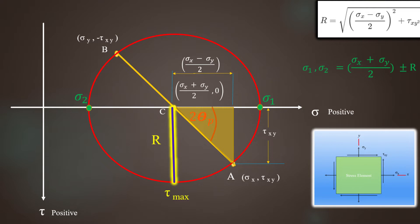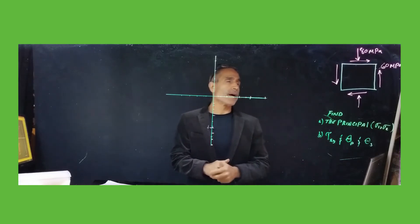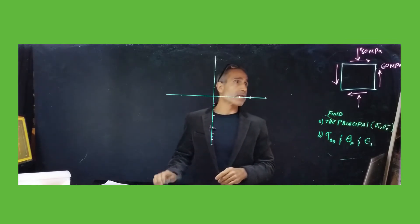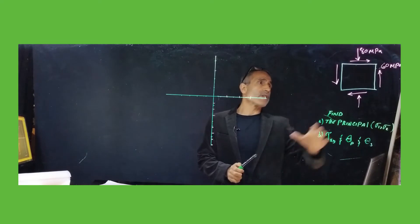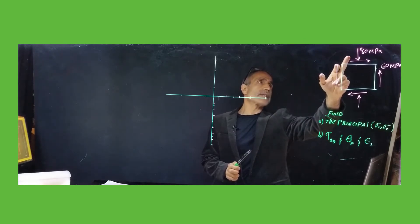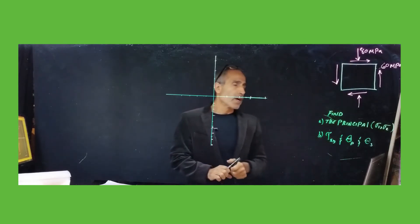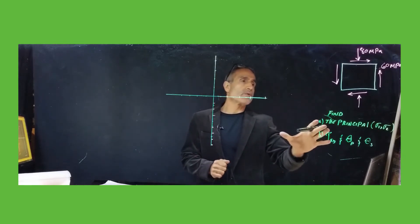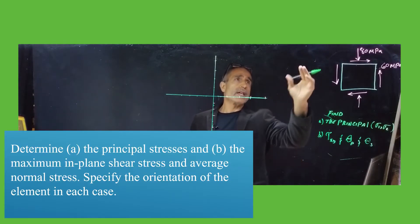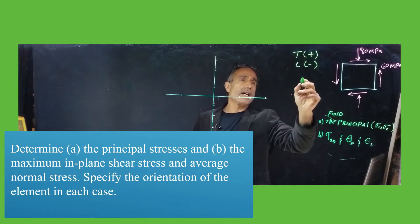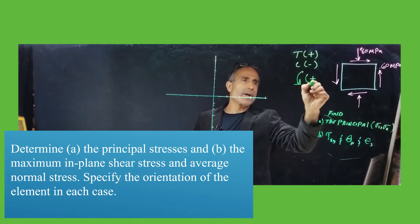Now let's do an example to explain this in more detail. We have this stress element with the given information: 60 MPa shear and zero normal stress on the x side, and 80 MPa normal stress with shear on the y side. First, let's get our sign convention ready: tension is positive, compression is negative, and counterclockwise is positive for rotation.